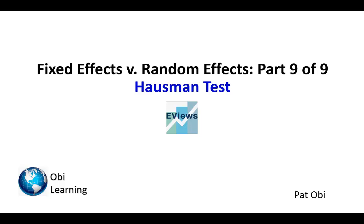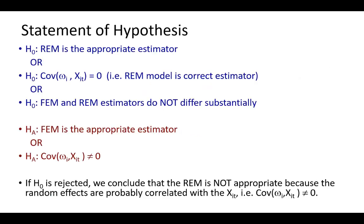By this process we're trying to determine which model results are more reliable, in the sense that we have parameter estimates that are not only unbiased but also efficient and consistent. The null hypothesis underlying the Hausman test is that the random effects model is the appropriate estimator.